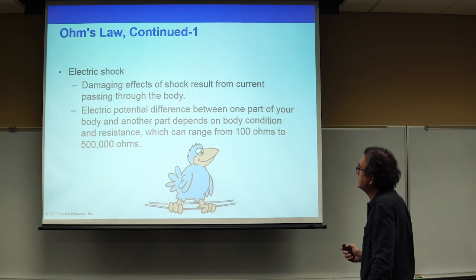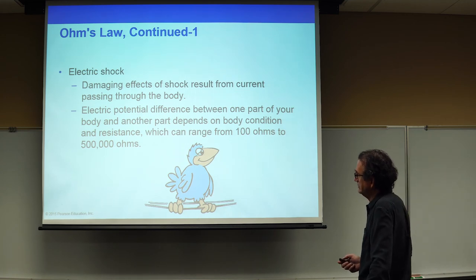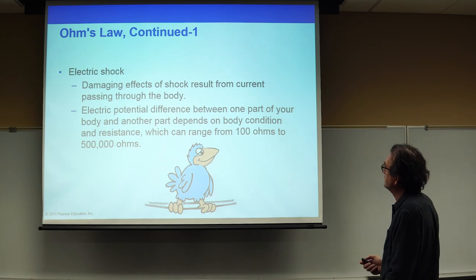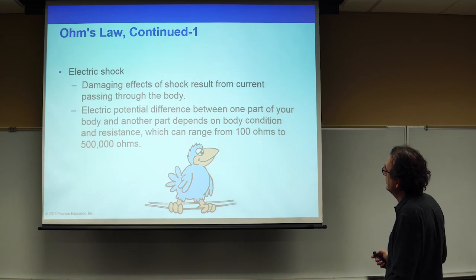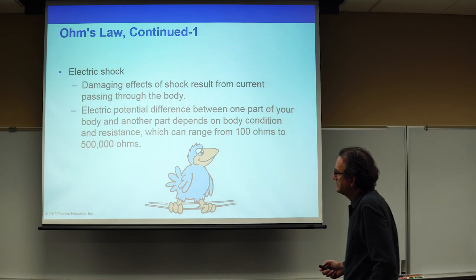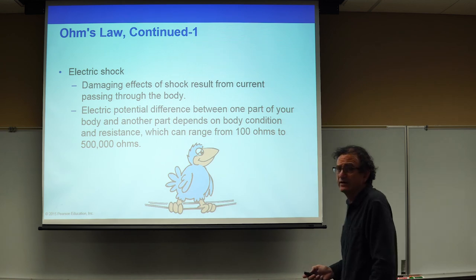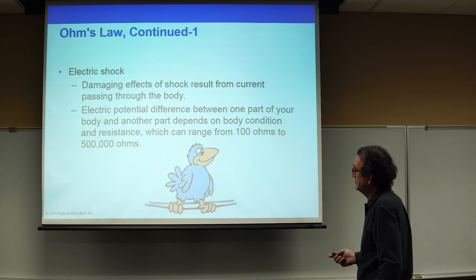The electrical potential between one part of your body and another depends on your body condition. The resistance of your body can vary between 100 and 500,000 ohms. If a tenth of an amp is enough to kill you, then using Ohm's law V over R, you would not want to exceed 1,000 volts from a source — 1,000 volts divided by 100 ohms gives about 0.1 amps, which would in fact be enough to kill you if that voltage source was able to deliver enough current.